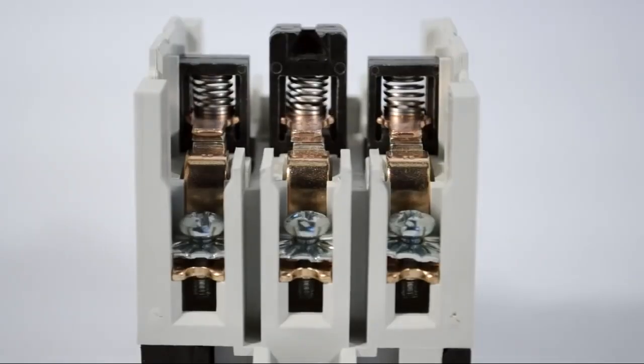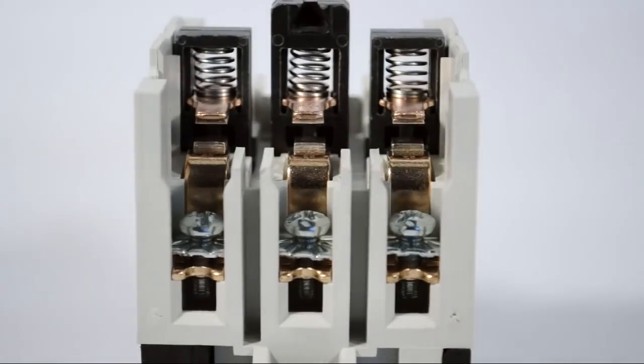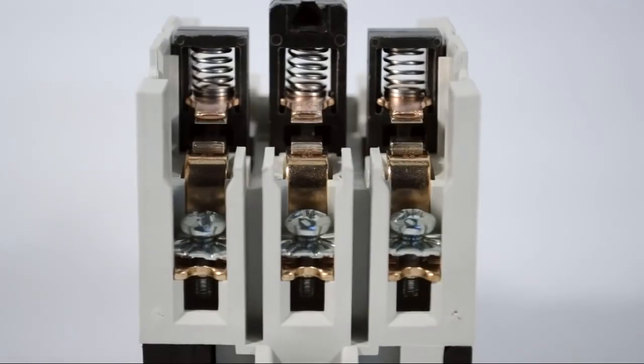Here's a close-up view of the electrical contacts. If the contactor were hooked up to a motor right now, this is where the power would flow through the contactor and out to the motor.